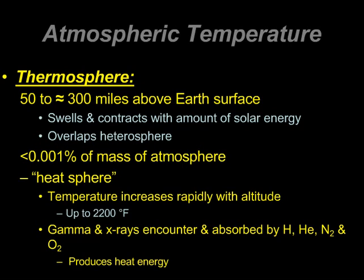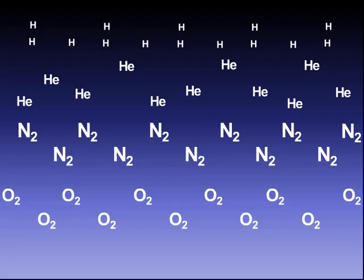Why is temperature so high in the thermosphere? Keep in mind those gamma and X-rays — those short waves with the highest energy — start to interact and become absorbed by the hydrogen, helium, and nitrogen gases up in the heterosphere. The interaction of these short-wave electromagnetic rays with upper-level atoms produces a lot of heat energy. A byproduct of that absorption is the production of heat energy.